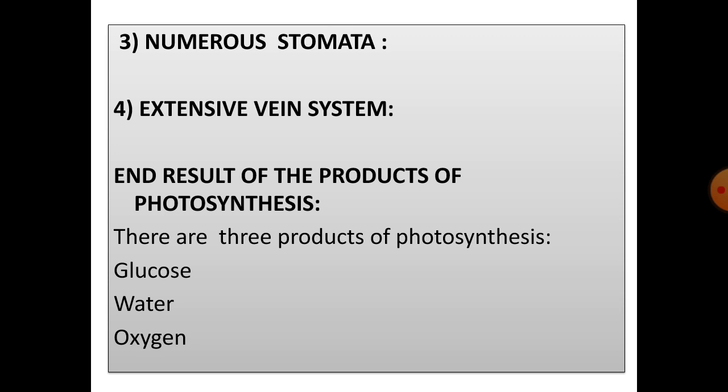Extensive vein system. This is for rapid transport of water as well as minerals and food to and from the mesophyll cells. Many such adaptations include thinness of leaves that reduces the distance between cells, facilitating more rapid transport. The chloroplasts are mainly present in the upper layers of the leaf so that they can absorb light energy.